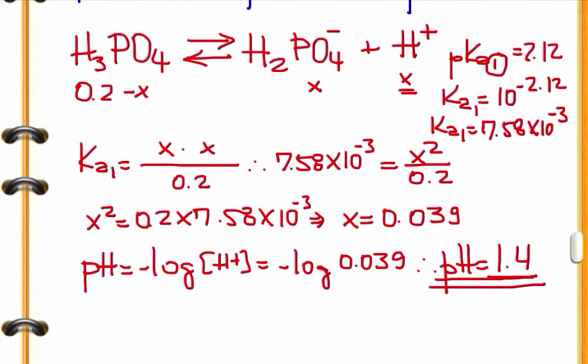Then we get the pH equals 1.4. This is a good approximation here. With the proper calculation, it should be a little bit different from that, probably around 1.5. But that's fine. That's just an approximation here. Let's now move to part B of the problem.